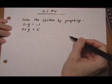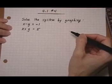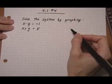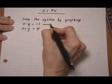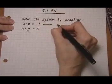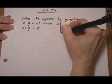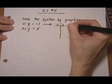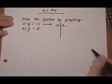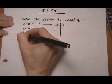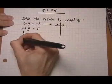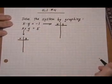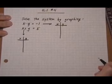Four point one number four. Here we have a system of two linear equations and we want to solve it by graphing. So what we're going to need to do is look at our first equation, get three points to plot and we'll graph it on a rectangular coordinate system, and we're going to look at our second equation, also get three points to plot and we'll graph that one on the same graph and we'll see where the two intersect.